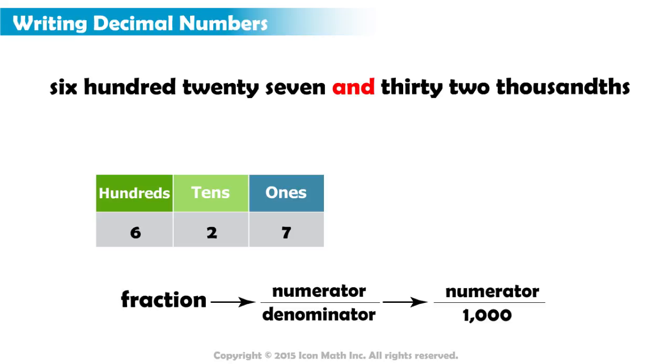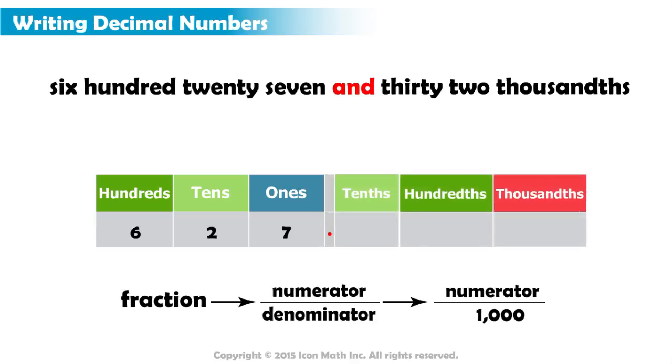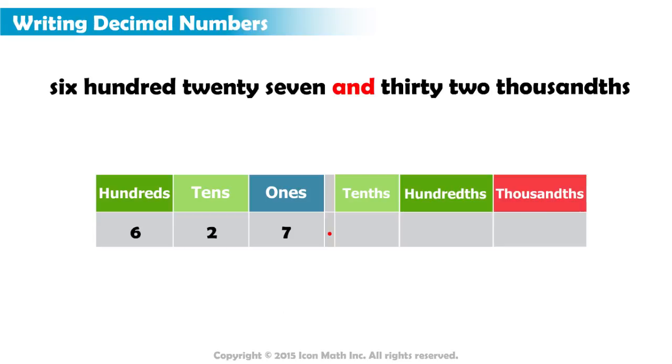If the words were hundredths, the denominator would be 100, and if it were tenths, the denominator would be 10. But since the denominator has three zeros, the decimal part should be represented with three decimal places. This means we need to fill in the places for the tenths, the hundredths, and the thousandths.